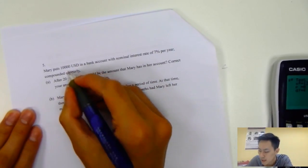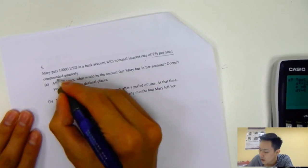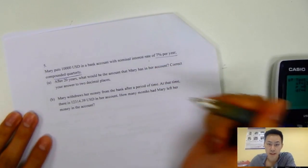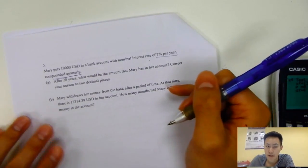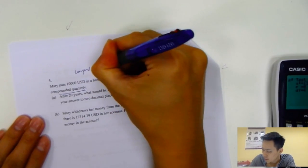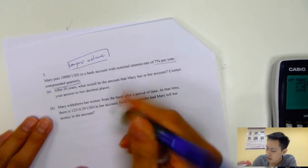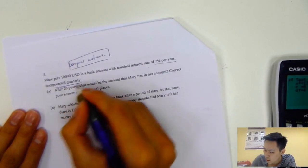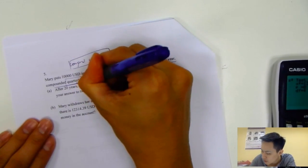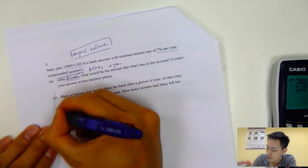Next page. Mary put $10,000 into the bank with the nominal interest rate 7% per year, compounded quarterly. For this one, it's an advanced compound interest question. The first question we just compound the number of years, but this one compounds quarterly, that means 4 times a year.